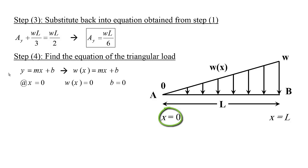At X equals 0, WX equals 0, that leads to B equals 0. And at X equals L, WX equals W, so we can solve for M, which is W over L. Now we have a full equation for the line, which is WX over L.